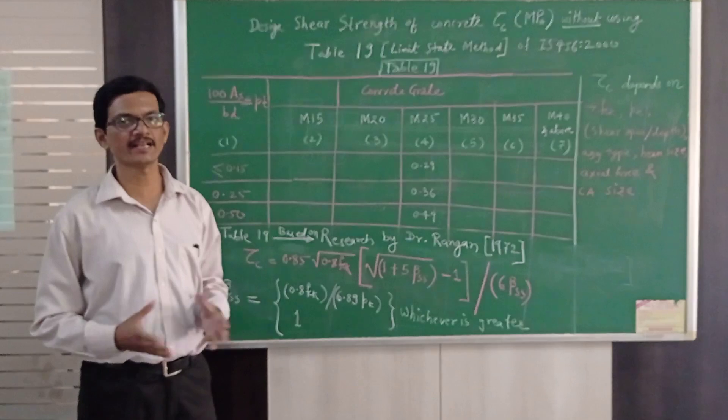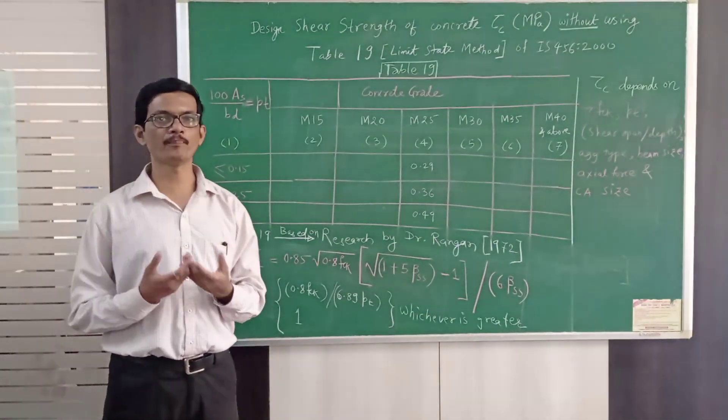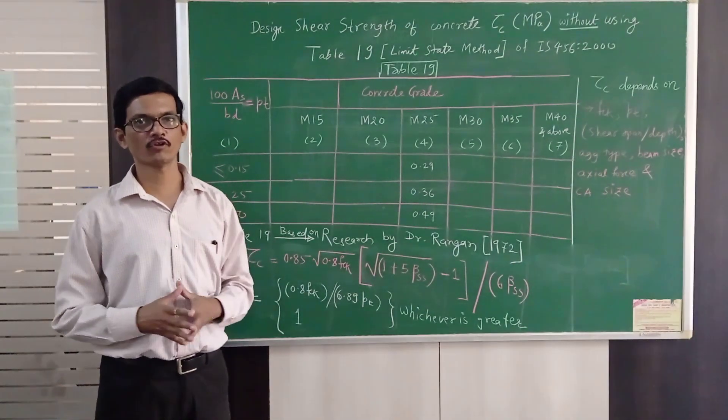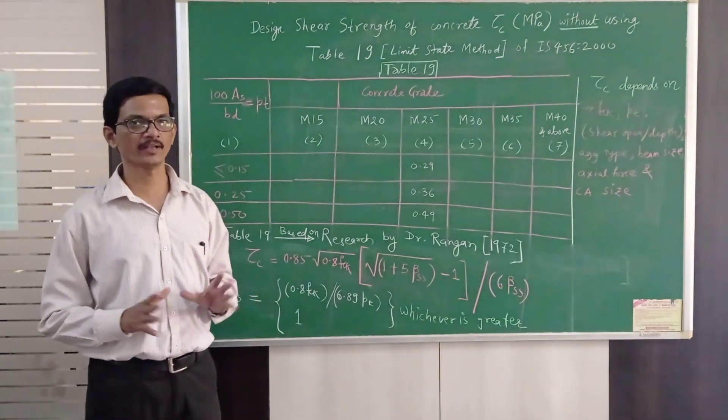There is no question of interpolation at all. Directly for any random value of Pt we can arrive at tau c. For that we have to remember just two formulae.